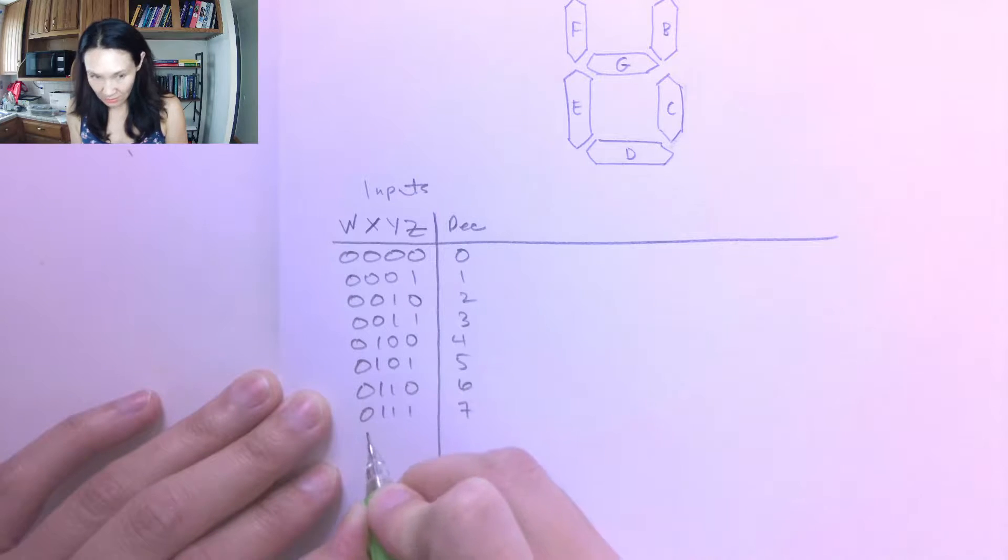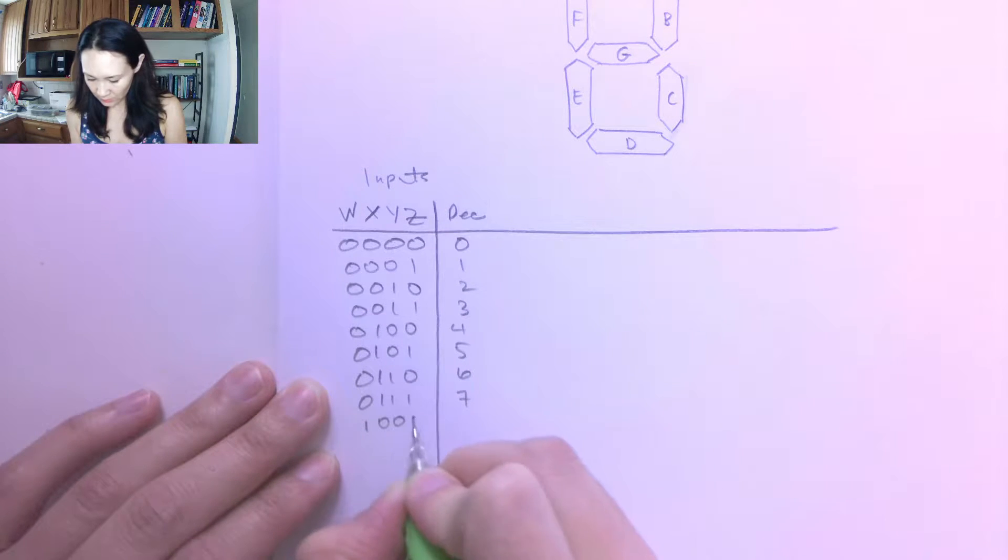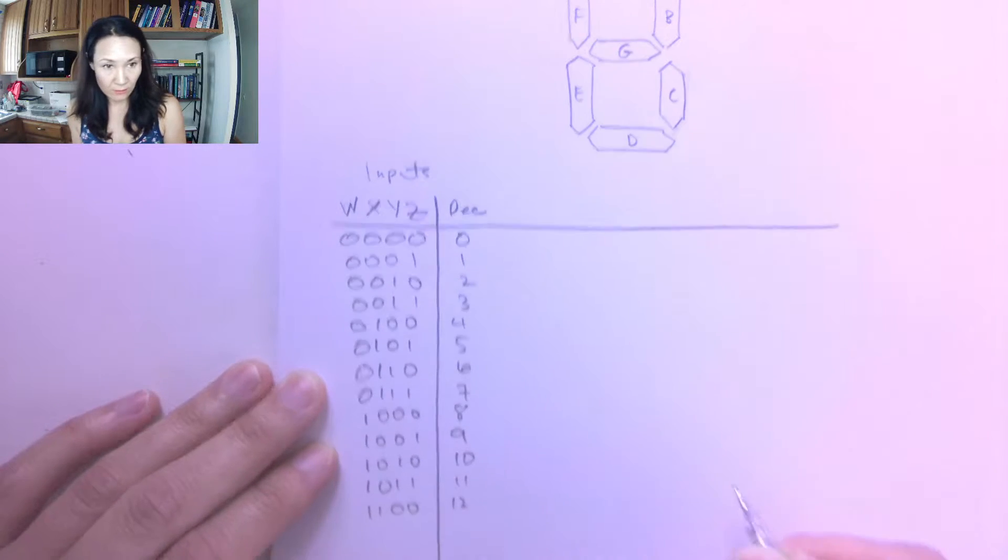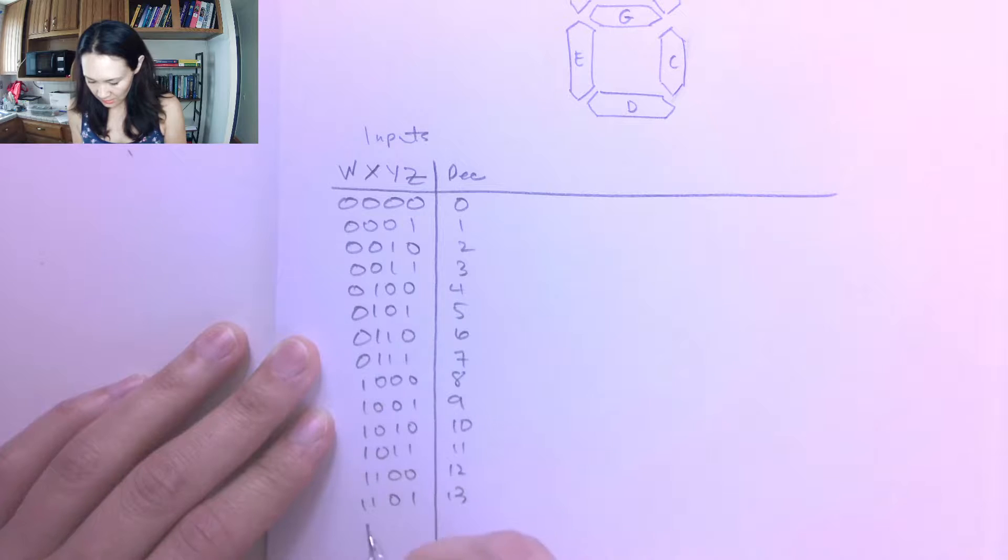0111 is 7, and then 1000 is 8, 1001 is 9, 1010 is 10, 1011 is 11, 1100 is 12, 1101 is 13, 1110 is 14, and 1111 is 15.